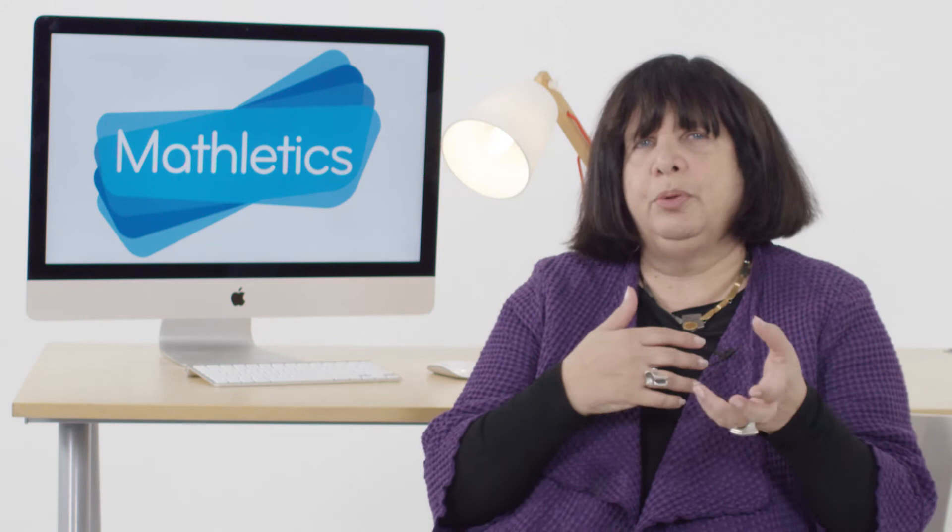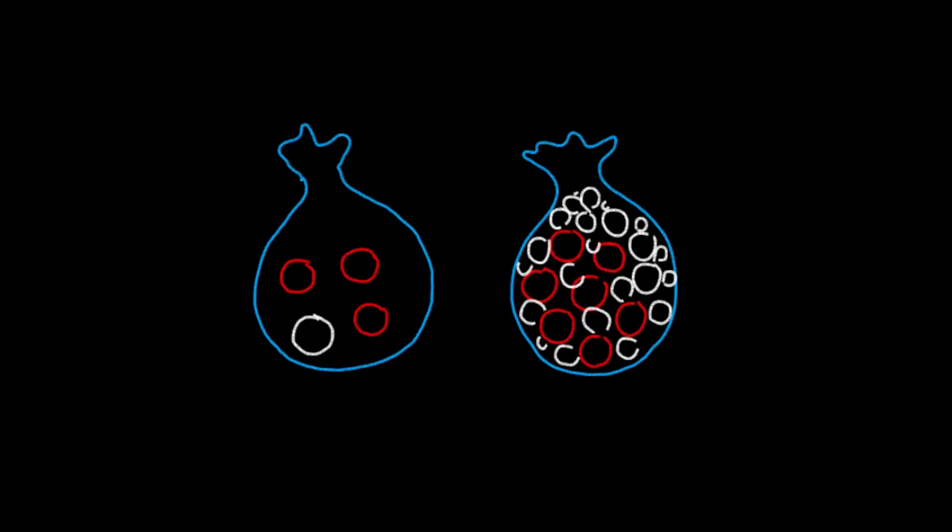We use unitizing and proportional thinking when we're thinking in probability. So if I have a little bag of counters and this bag has three red and one white, and this other bag has seven red and a thousand white —